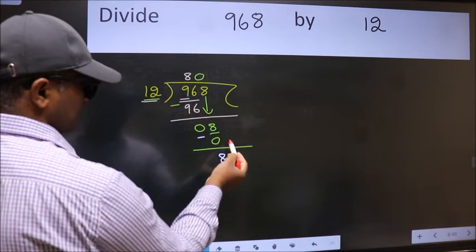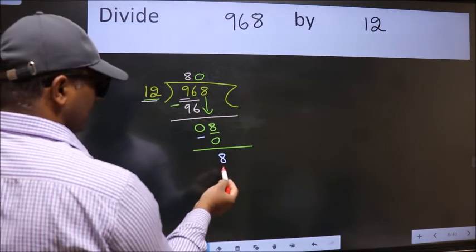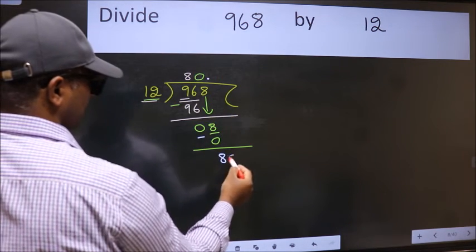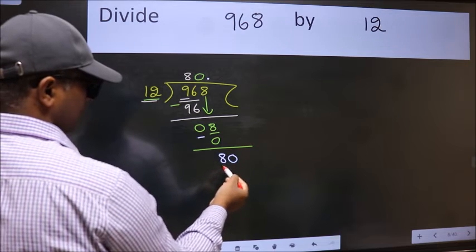Now we subtract, we get 8. Over here we did not bring any number down, and 8 is smaller than 12, so now we can put dot and take 0. So 80.